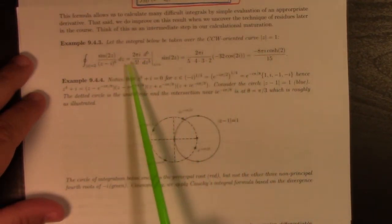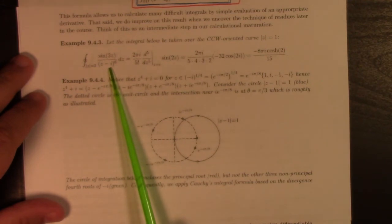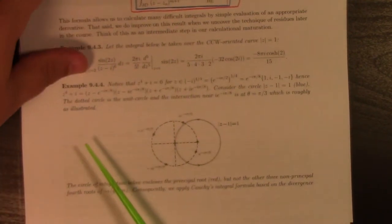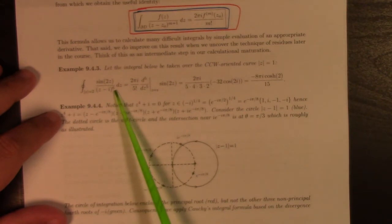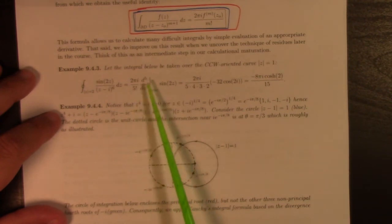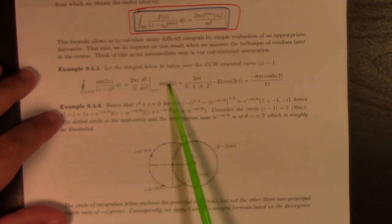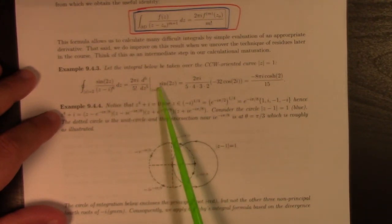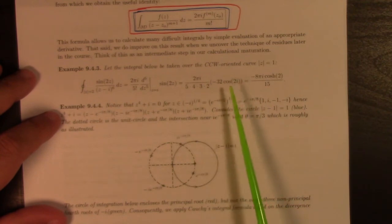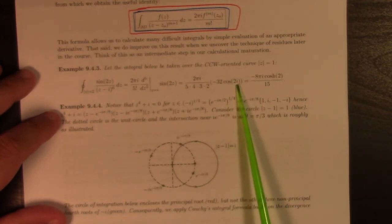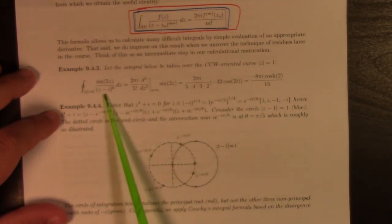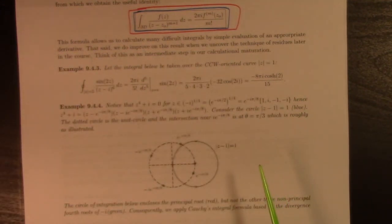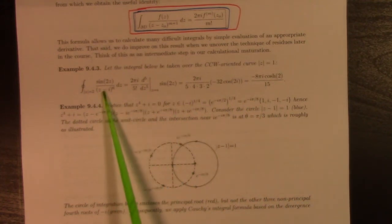So here's a simple example. If we integrate sine of z over z minus i to the sixth power, then direct application of Cauchy's integral formula, with, in this case, my m is equal to five, because five plus one is six. So we have 2 pi i over 5 factorial, the fifth derivative of sine of 2z evaluated at z equals i. And so that's a pretty easy five derivatives to do. It picks up a minus 32 cosine 2i. And so there you go. Minus 8 pi i cosine of 2 divided by 15 is the value of that integral. I think we can all agree that this is easier than direct computation of that.